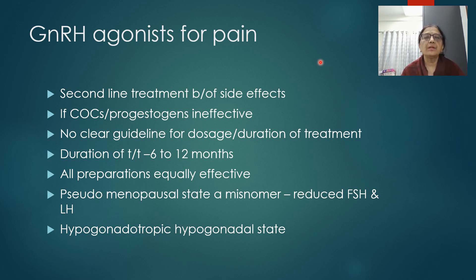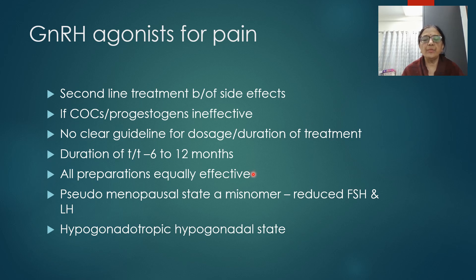GnRH agonists are the next option — second-line treatment due to serious side effects. First-line is always COCs or progestogens; GnRH analogs are started only if these are ineffective. There are no clear guidelines for dosage and duration, but in practice treatment is given for 6 to 12 months. All preparations are equally effective.